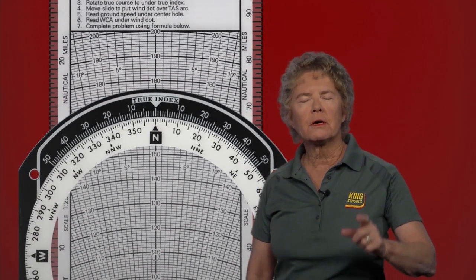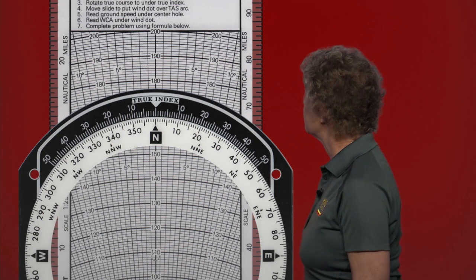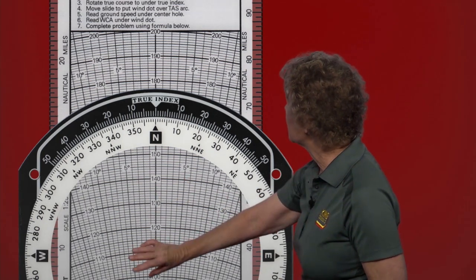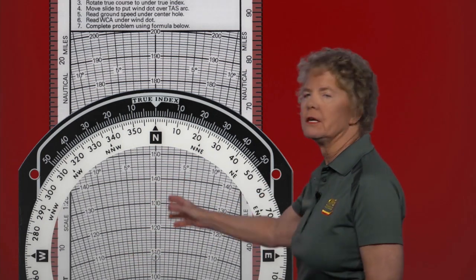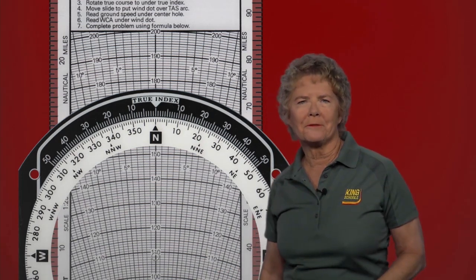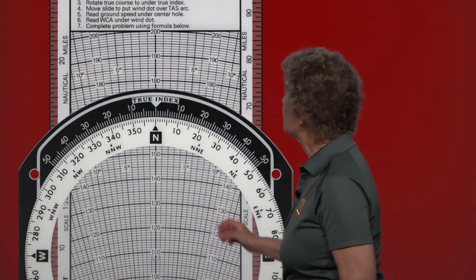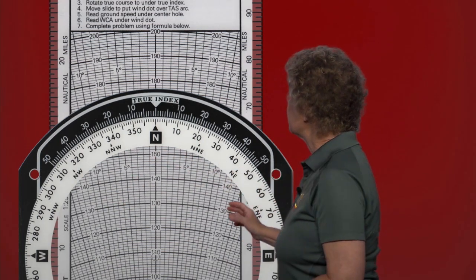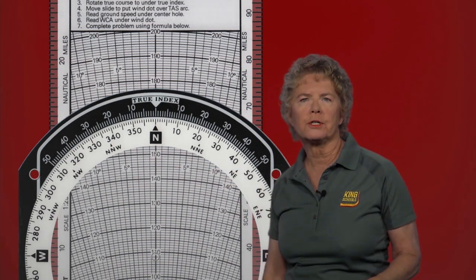In the center of the wind side of the flight computer, we've got a clear plastic disk that can rotate, and we'll be turning it a little later on as we work out a wind problem. We also have a compass rose that we'll be using for headings and for courses.